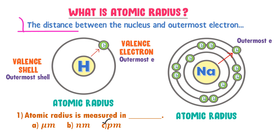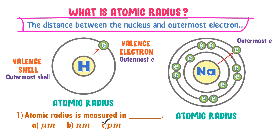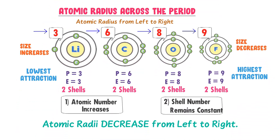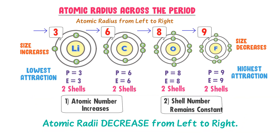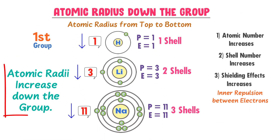To conclude this lecture: atomic radius is the distance between the nucleus and outermost shell of an atom. Atomic radii decrease across the period because atomic number increases but the number of shells remains constant. Atomic radii increase down the group because atomic number increases, number of shells increases, and shielding effect increases.